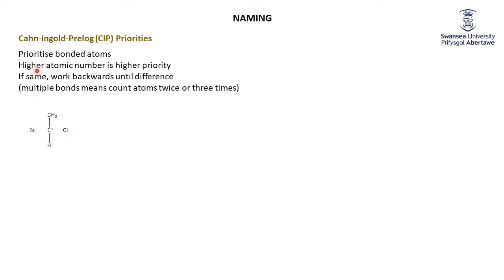The four groups are: a methyl carbon, chlorine, hydrogen, and bromine. What's the highest atomic number? Bromine — so that's priority number one. Next highest is chlorine, priority number two. Next is the carbon of the methyl group, so that's number three. And finally, the hydrogen is always the lowest priority, number four.